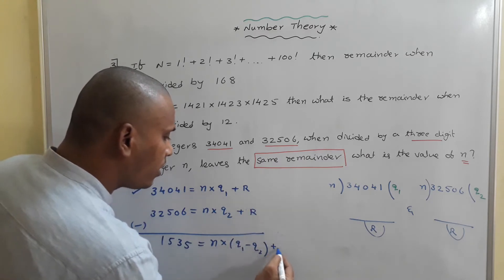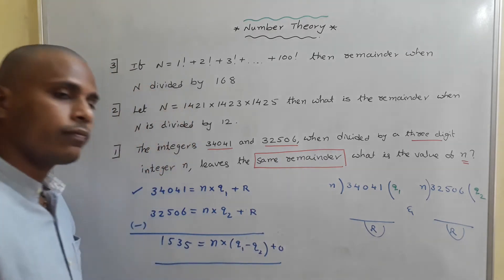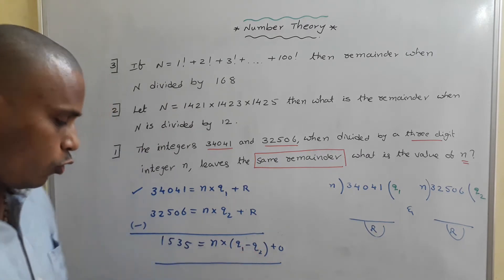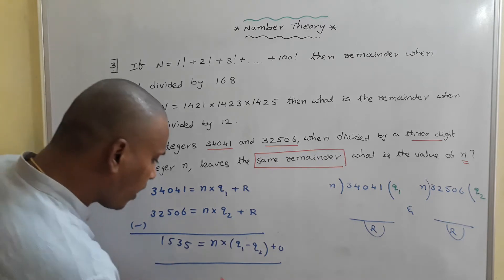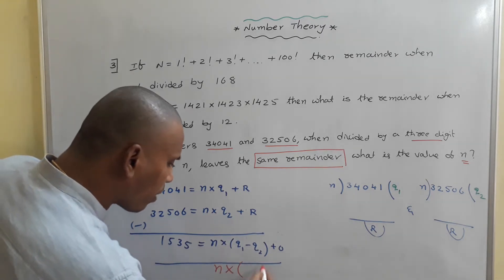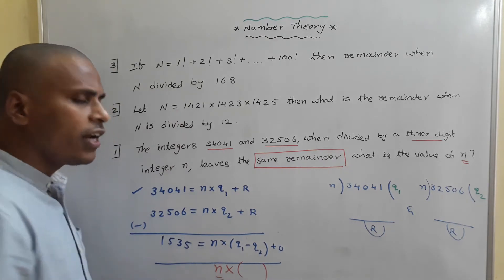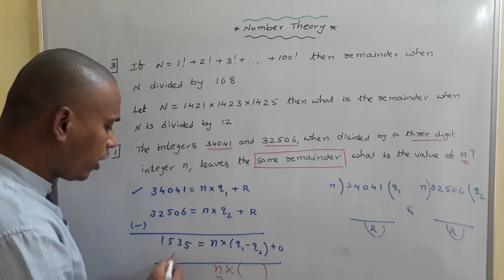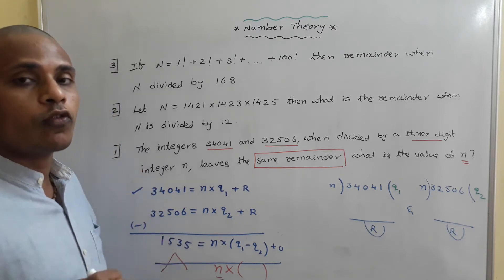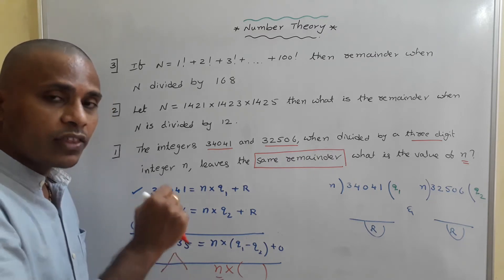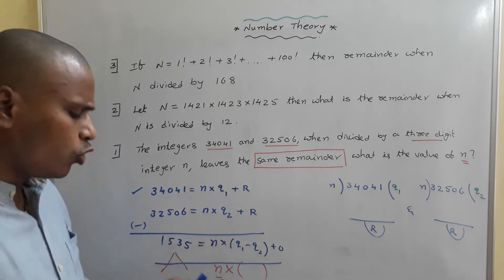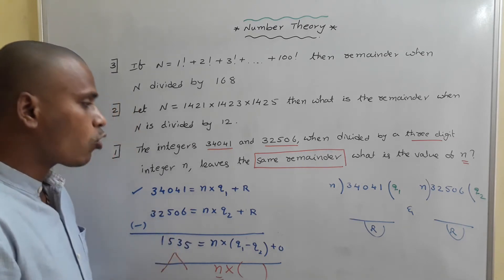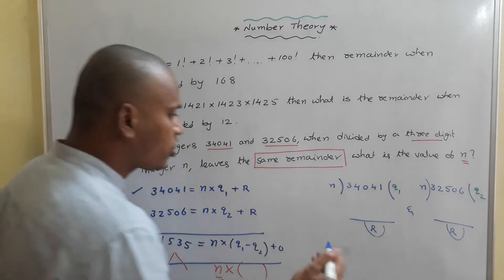Plus r minus r equals 0. So at the end, we have 1,535 = n × (q₁ - q₂), meaning 1,535 equals n times some number. We need to identify a three-digit number for the value of n. We need to split 1,535 as a product of two numbers where one is a three-digit integer. For that, we do prime factorization of 1,535.